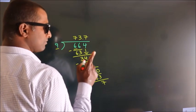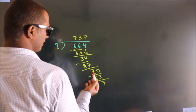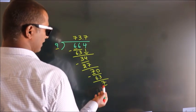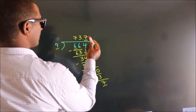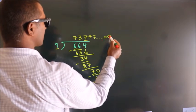Now you observe, we had 7 here and we got 7 again. That means this number keeps on repeating. So this is our quotient.